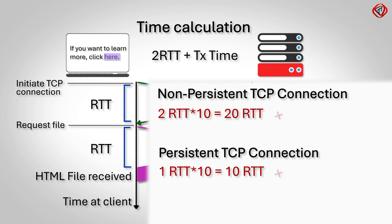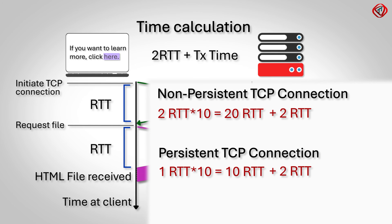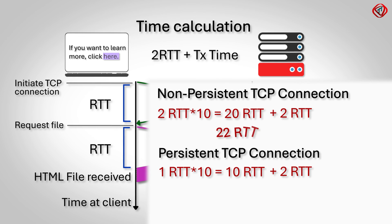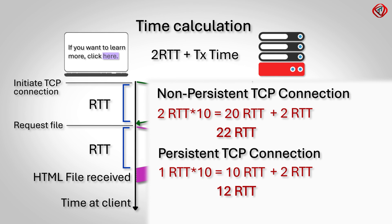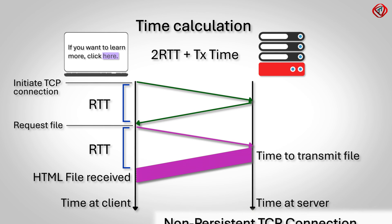In both connection types, 2 RTT is consumed to receive the first object, which is the HTML file. So the total RTT consumed to receive all 11 objects is 22 RTT for non-persistent connections and 12 RTT for persistent connections. The total delay is less in persistent TCP connections. This is one of the key benefits of persistent TCP connection over non-persistent TCP connection. By default, HTTP uses persistent connections. However, the client and server can be configured to use non-persistent connections for HTTP.